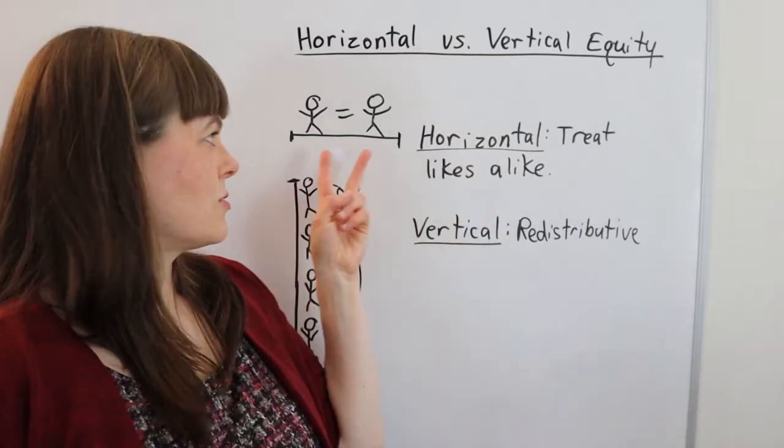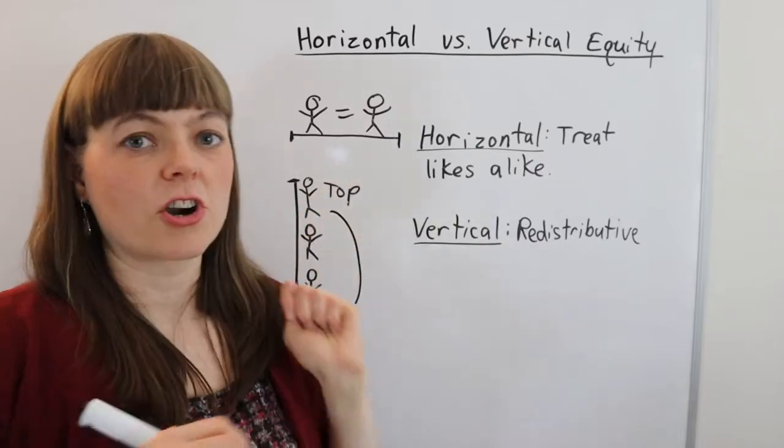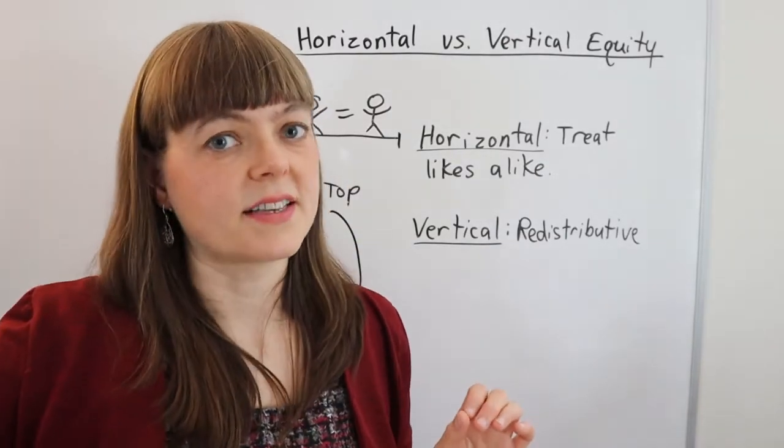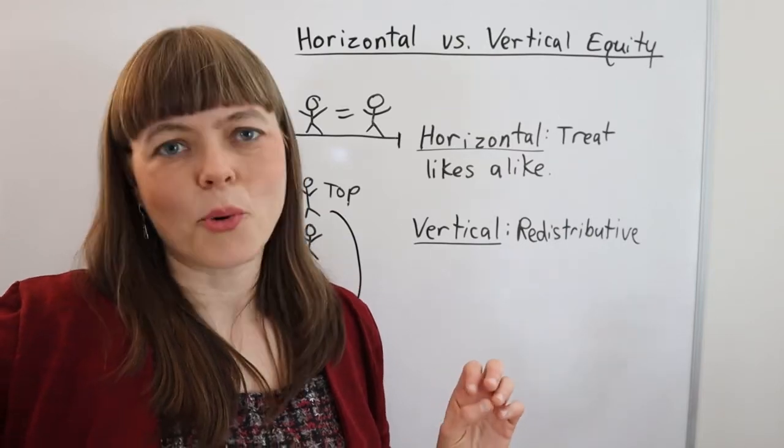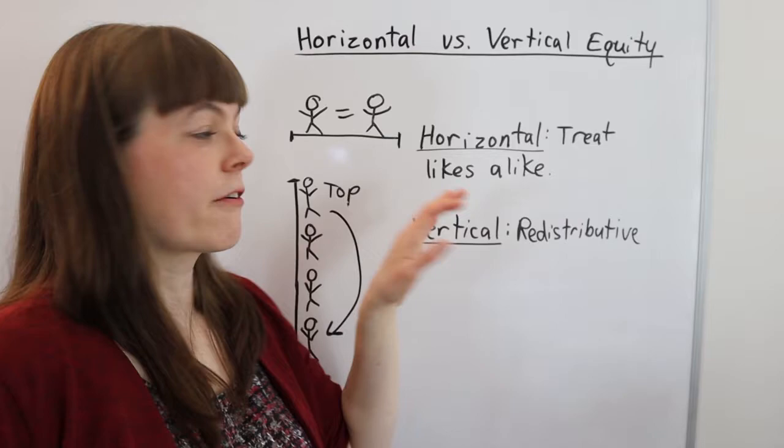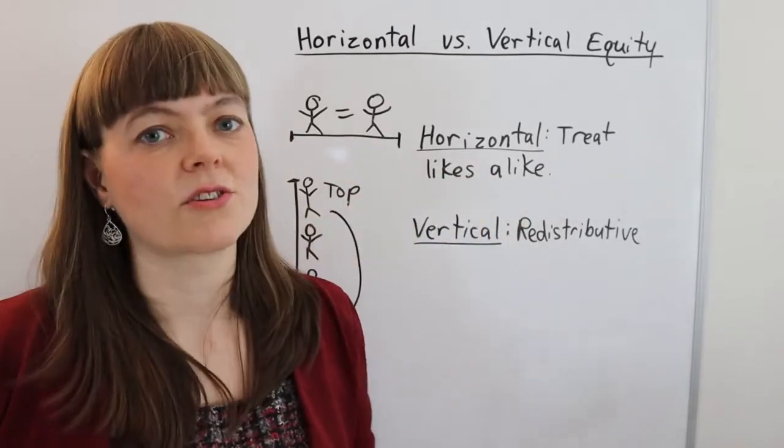So even though those people are alike—horizontally, they're similar—the law gives one of them access to healthcare in a way that is much more supportive than the other. And that's an example of a violation of horizontal equity.